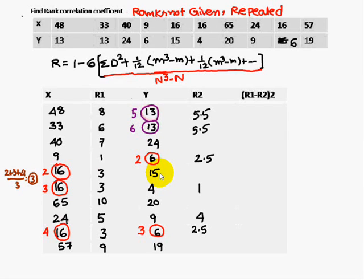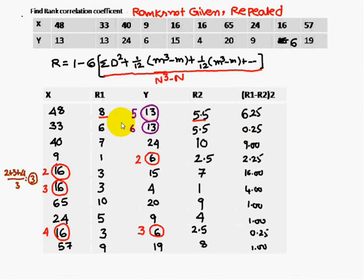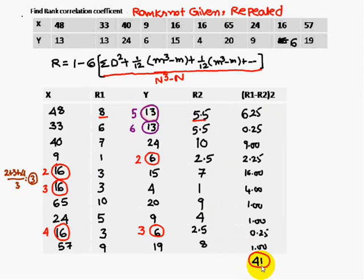The next highest value is 15, which gets rank 7. The remaining ranks are assigned similarly to the remaining numbers. We then compute the difference in ranks d: for example, 8 minus 5.5 gives 6.25 when squared. Adding all squared differences gives sigma d square.